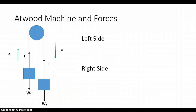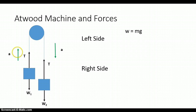Those masses have a weight associated with them, and in order to find that weight, we multiply the mass times gravity, and that gives us the weight of each one of our masses. In addition to the weights that are going downward, if you look up at the top, you'll notice that there is tension indicated by the letter T. So you have weight pulling downwards and tension pulling upwards on both sides of the Atwood machine.